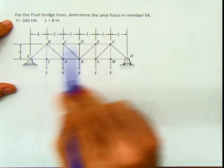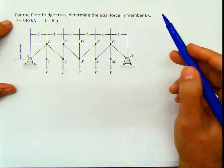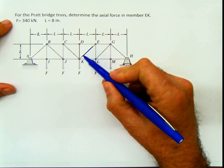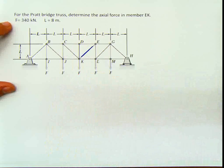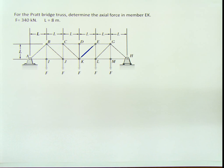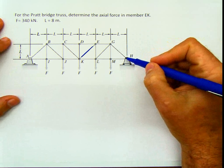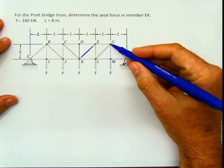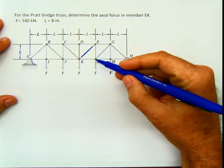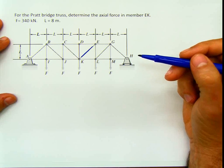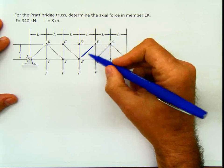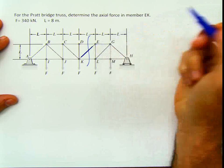It says, for the Pratt-Bridge truss shown here, determine the actual force in the member EK — this member. That's the one that I have to calculate. Each load F is equal to 340, and L equals 8 meters for all spacings. It doesn't tell me to use method of sections, but if I used method of joints, I'd have to solve joints 1, 2, 3, 4, 5 in order to get to that bar. So instead, I can just make one quick section here and immediately find that bar.